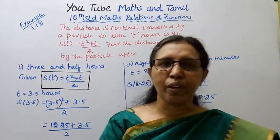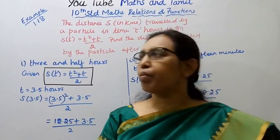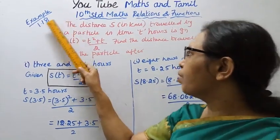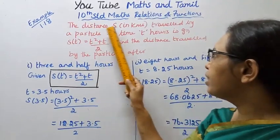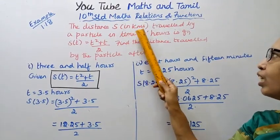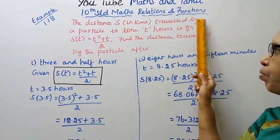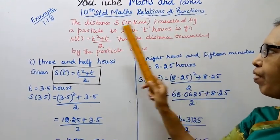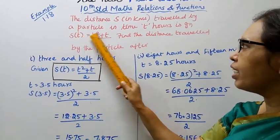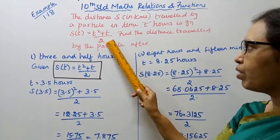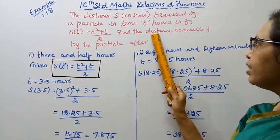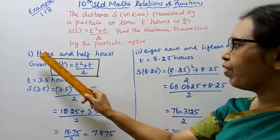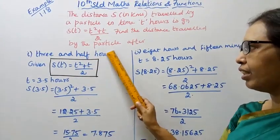Hello students, welcome to Maths and Tamil channel. Trinstead Maths Relations and Functions Example 1.18. The distance s in kilometers traveled by a particle in time t is given by s of t equal to t squared plus t by 2. Find the distance traveled by the particle after first 3 and a half hours.